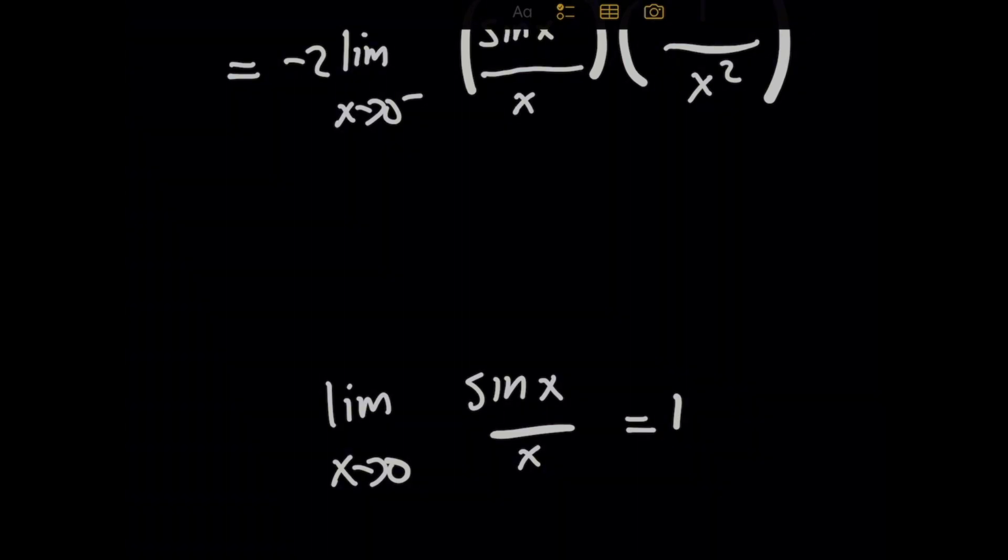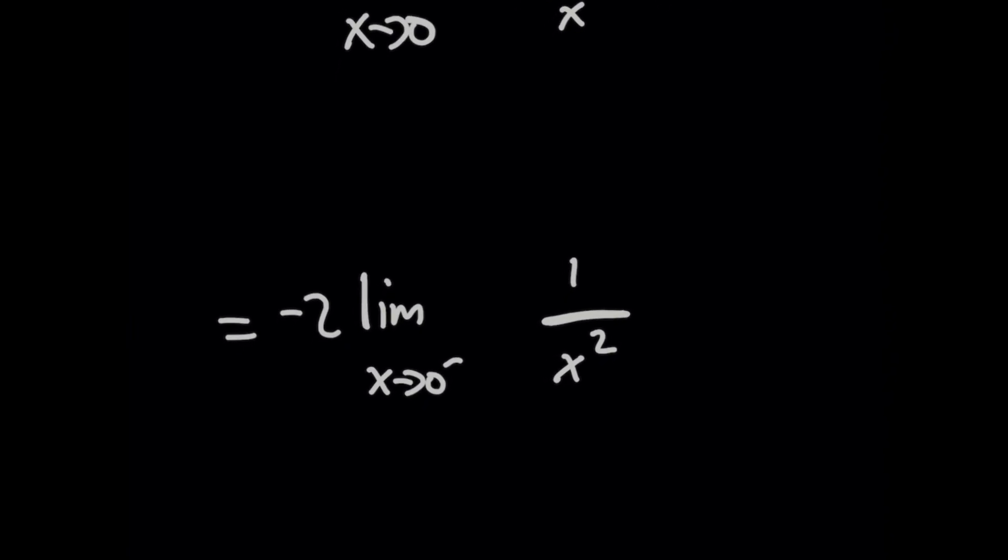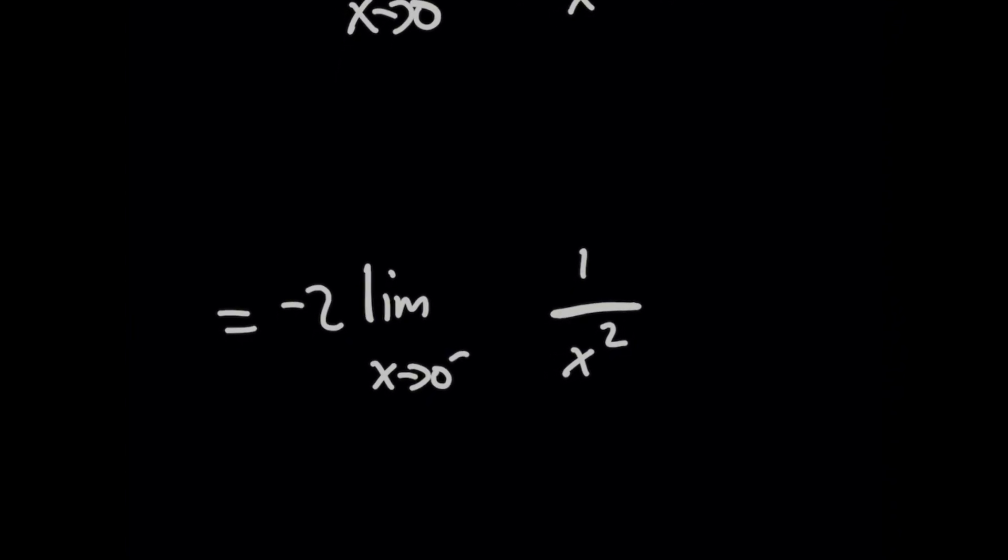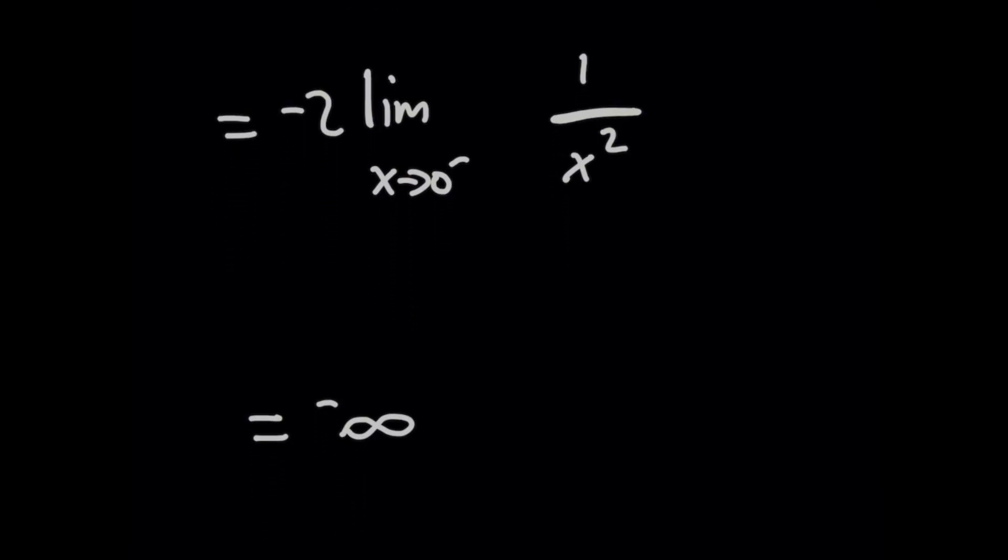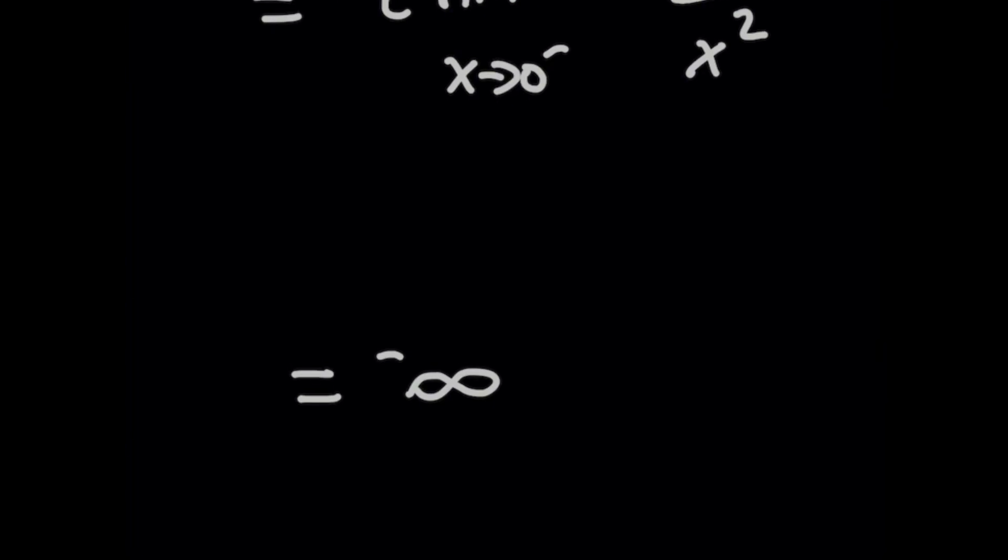I'm going to go ahead and plug this value in, so now we're dealing with negative 2 times the limit as x approaches 0 from the left of 1 over x squared times that 1. And this is pretty obvious. The denominator is just growing and growing, so this is going to be a limit that results in infinity times this negative 2. In other words, this limit approaches negative infinity. It doesn't converge to a value. And because that's not the same as what we got above for the right-hand side limit, we know that our answer means this limit doesn't exist.